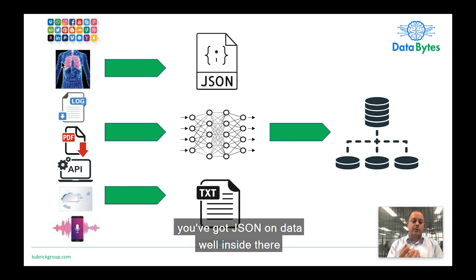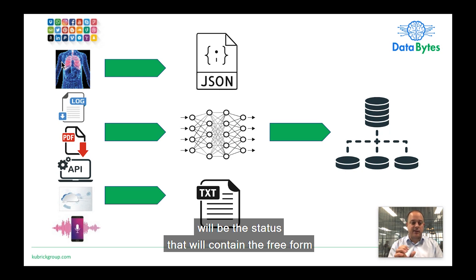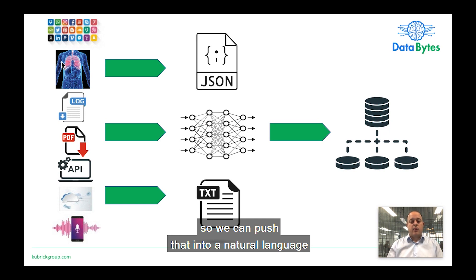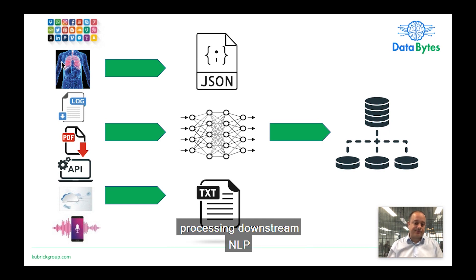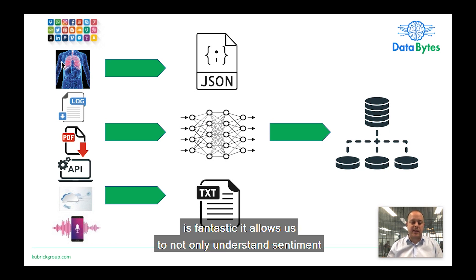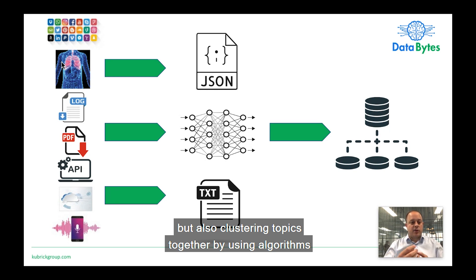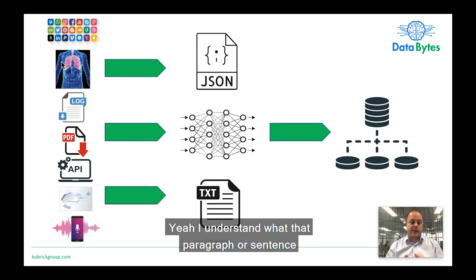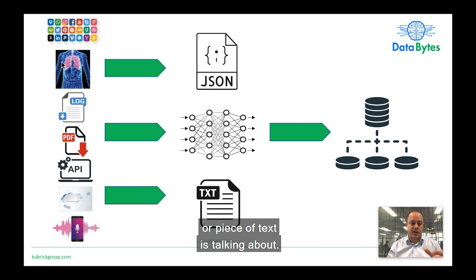In the case of a tweet, you're pulling down JSON data. Inside there will be the status that contains the free-form text — which is the unstructured information — which we want to quantify to understand sentiment or classify it, and push that into a natural language processing pipeline downstream. NLP is fantastic. It allows us to not only understand sentiment, but also cluster topics together by using algorithms such as Word2Vec or Document2Vec. With a trained model, it will be able to understand what that paragraph, sentence, or piece of text is talking about.